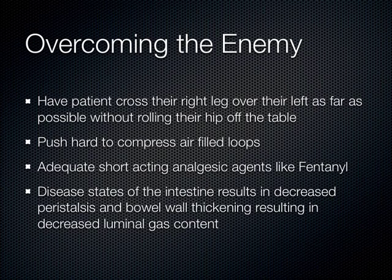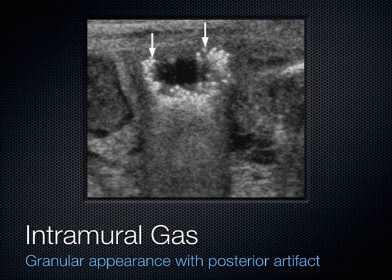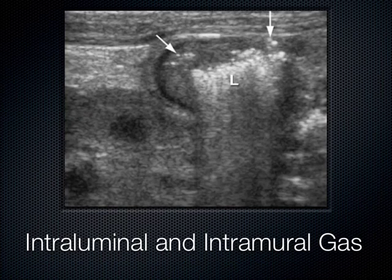Abnormal intestine like pseudomembranous colitis can be seen quite clearly. When there's gas inside the wall of the bowel — intramural gas — that's a very abnormal condition, indicating infection has progressed so far that gas is building inside the bowel wall. Seeing gas inside the lumen is normal, but intramural gas is always abnormal. This can be seen in conditions like necrotizing enterocolitis. We can also see intramural gas very clearly when ascites outlines the loops of bowel.